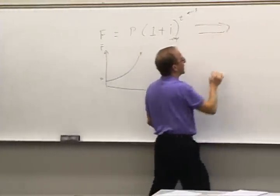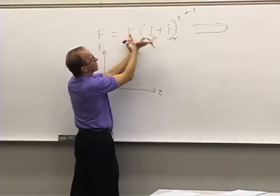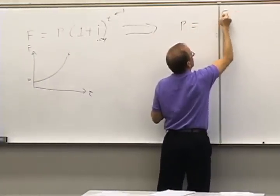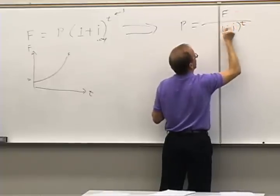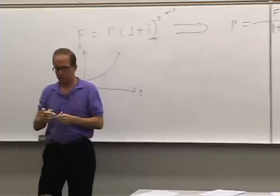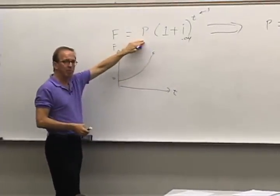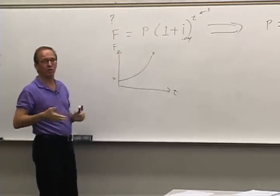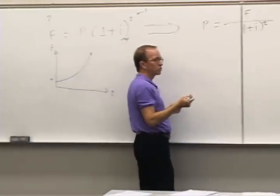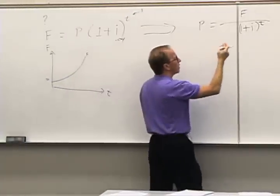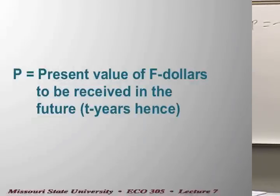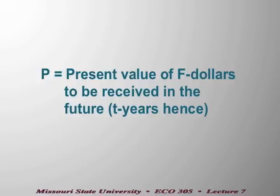Then what we did is take that and basically divide both sides of the formula by 1 plus i to the t power, and we turn this into a statement about present value: present value equals the future dollars from the investment divided by 1 plus i to the t power. We know the amount of money P dollars that we start with today, and now we're recognizing that in some investments we know the future amount of money — we know the amount we're going to get t years down the road.